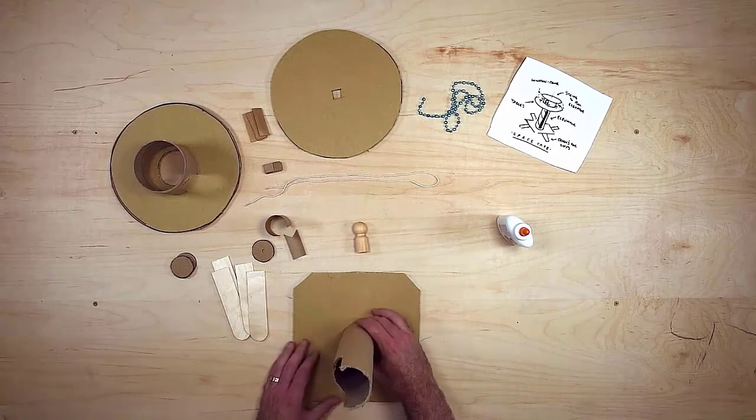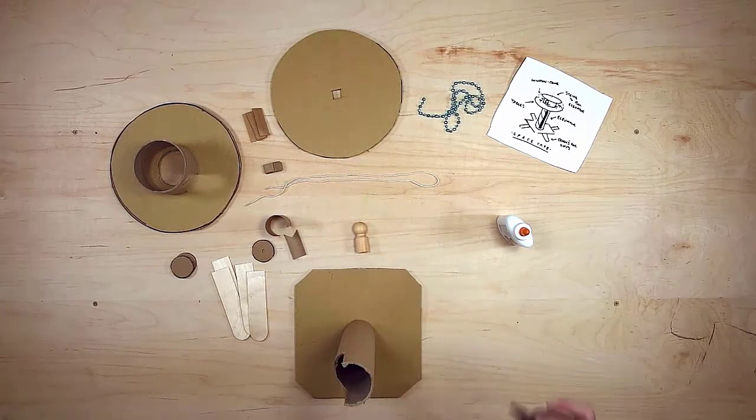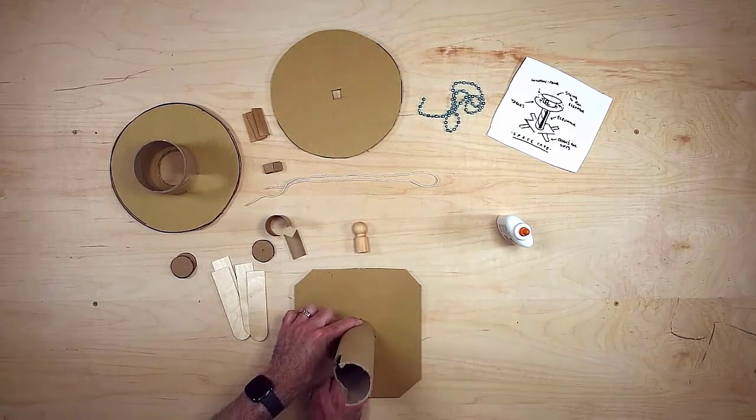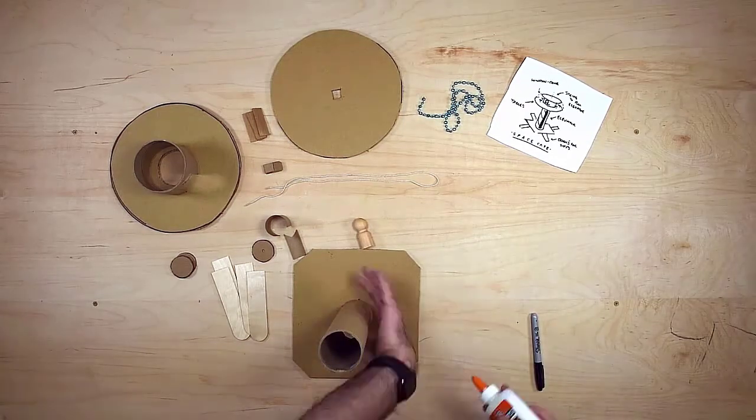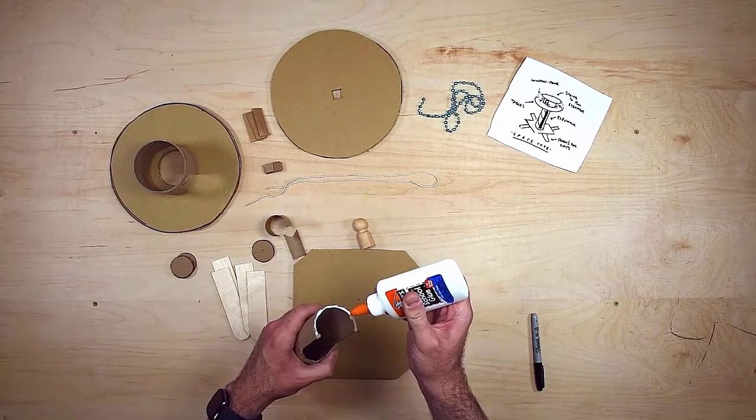The first thing I want to do is attach my elevator tube to the bottom platform. I do this by first marking where I want to put it using a marker. Then I put a little bit of glue along the bottom edge and stick it in place.